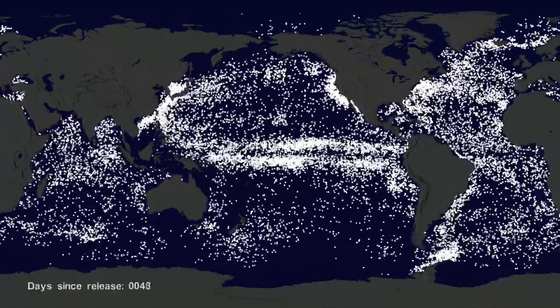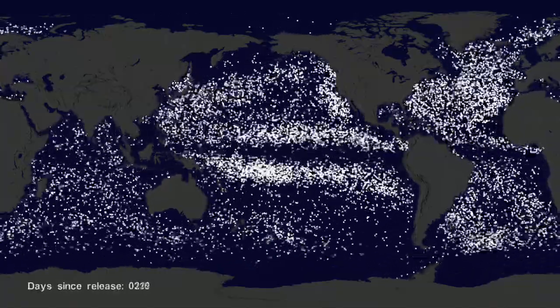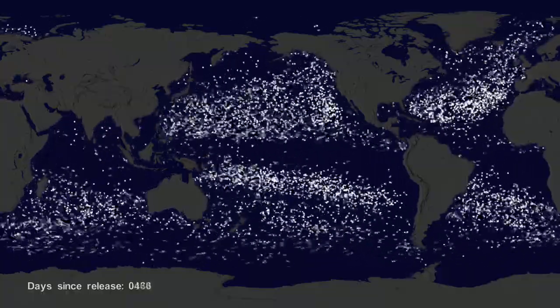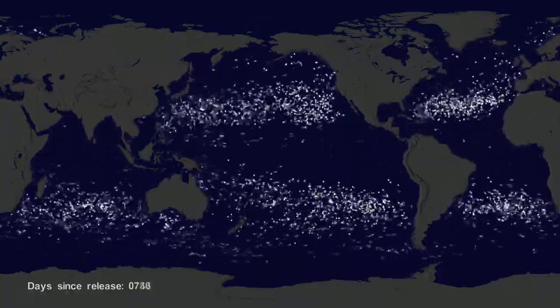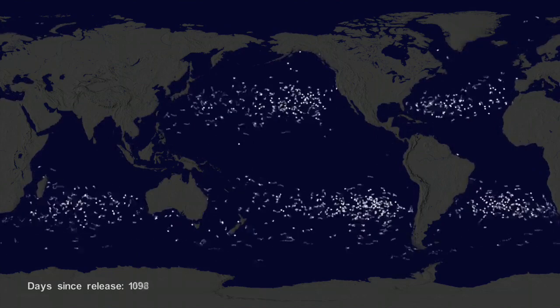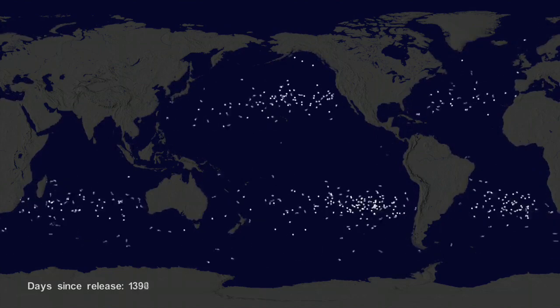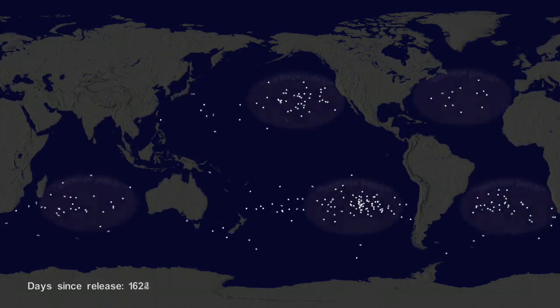If we let all the buoys go at the same time, we can observe buoy migration patterns. The number of buoys decreases because some buoys don't last as long as others. The buoys migrate to five known gyres, also called ocean garbage patches.